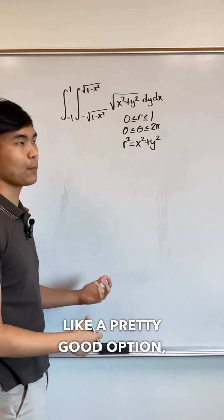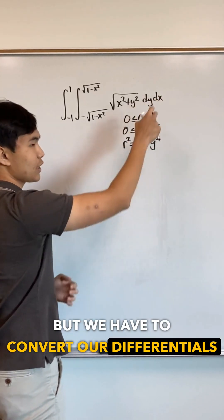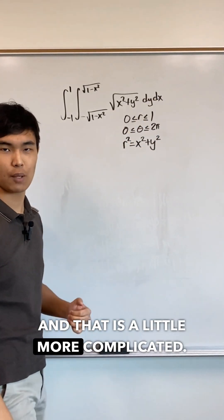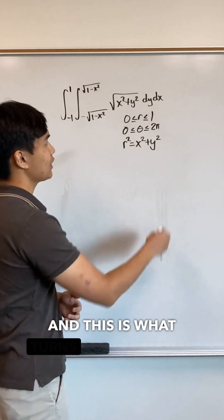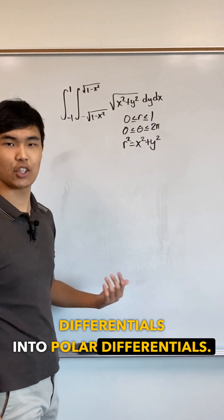Now this is seeming like a pretty good option, but we have to convert our differentials into polar form as well, and that is a little more complicated. To transform from Cartesian to polar coordinates, we have to use something called the Jacobian determinant. And this is what turns our Cartesian differentials into polar differentials.